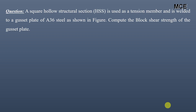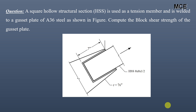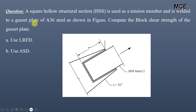In block shear failure, a block of a member is torn out around the periphery of the connections. Welcome back to Master Civil Engineering. In this video we will learn how to find block shear strength of welded connections according to AISC 360. A square hollow structural section is used as a tension member and is welded to a gusset plate of A36 steel. We have to find the block shear strength of the gusset plate using both LRFD and ASD methods.